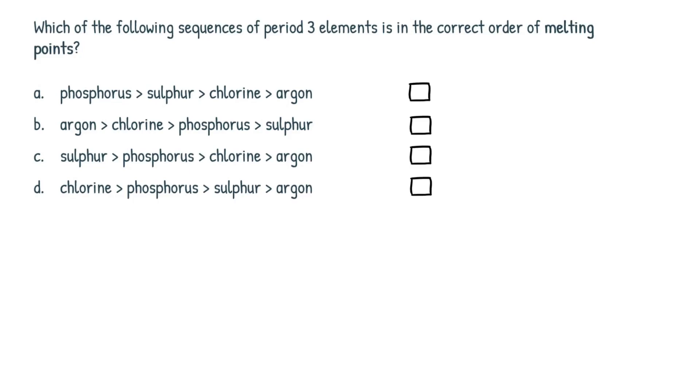Okay guys, so in this video we're going to be going through an AQA A-level chemistry past paper question. This is from the MCQ, the multiple choice section of paper 3. And this question here is about the melting points of period 3 elements. Okay, so which of the following sequences of period 3 elements is in the correct order of melting points?